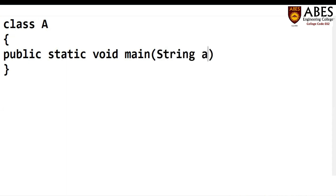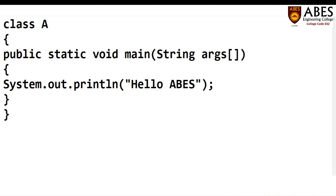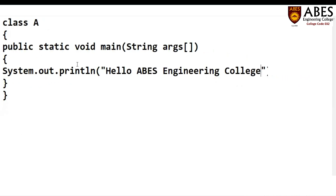The main method has an argument as a string array. Inside this, suppose we want to print a particular message. We can write System.out.println, and inside this we will write 'Hello KBES Engineering College'. Now you can see we have class A, and inside this class we have created a main method, and we have printed just a simple message.